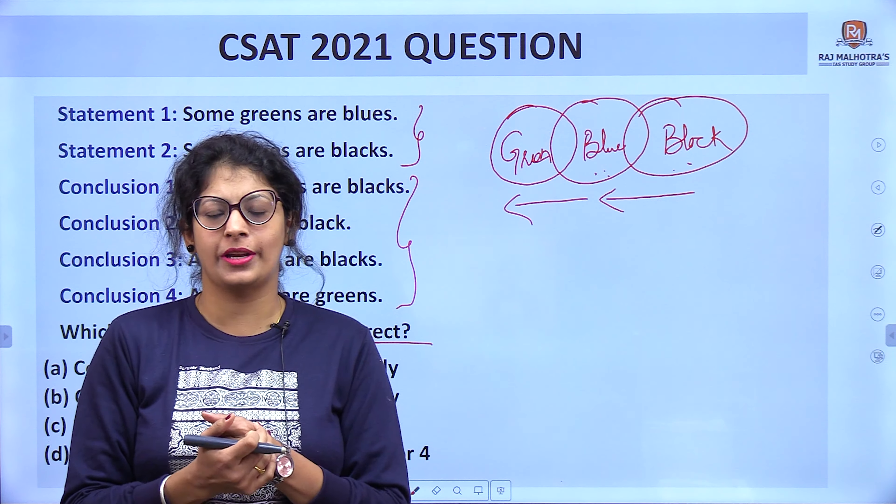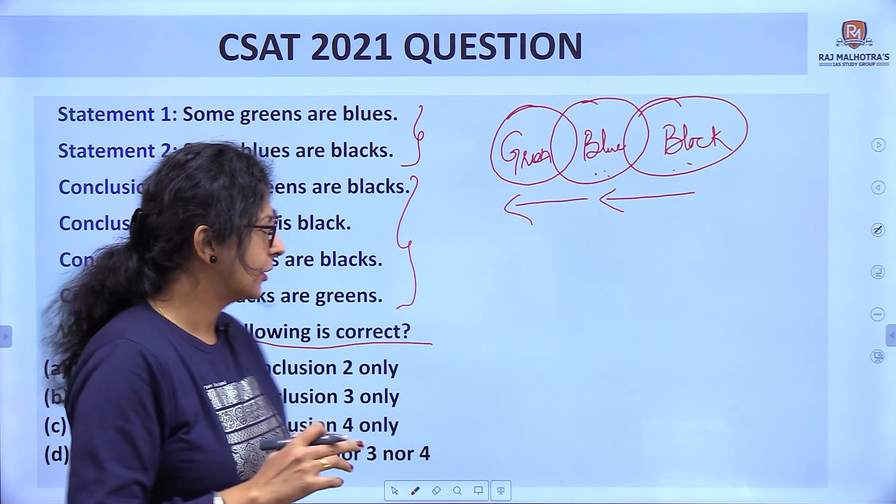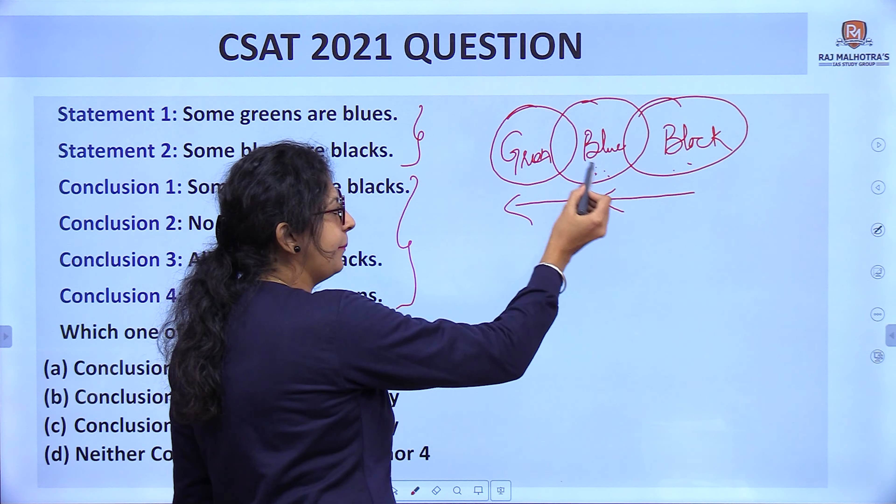Let's move to the first question asked in the paper. We have to draw the statements and then tell which conclusion is true or false. Some greens are blue — some blues are black. Toh this case mein mujhe surety kis ki hai — jo bilkul saath-saath hai. Means some black or blue is true, some blue or green is true. If the conclusion is some black or green, that is false — because mujhe uski surety nahi hai.